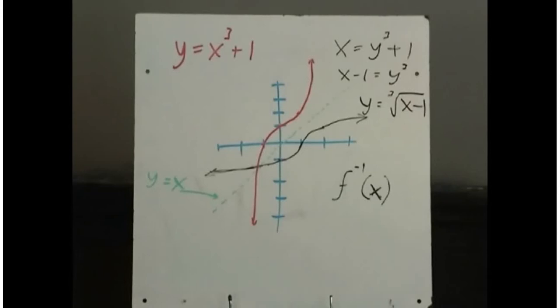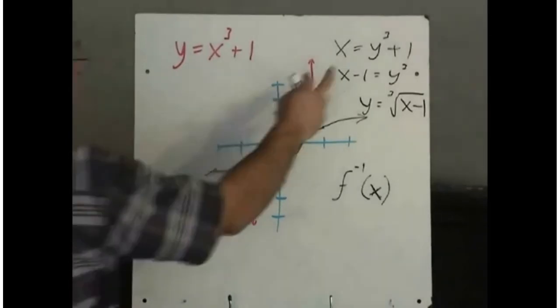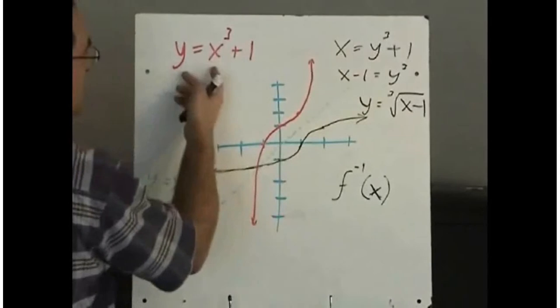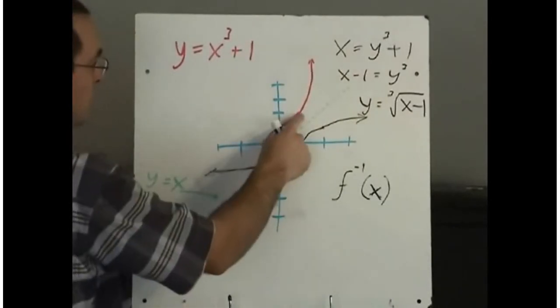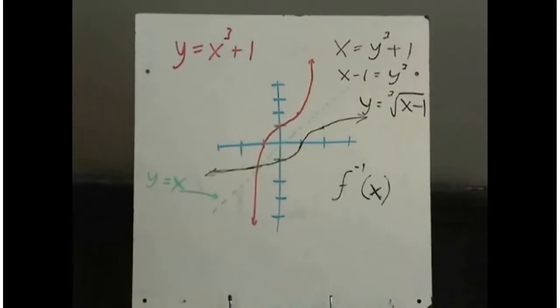Okay, so switching x and y gives us the inverse of a function. The other property of the inverse of a function is just as the x and y coordinates got switched in the function, so do the x and y coordinates get switched in the graph.